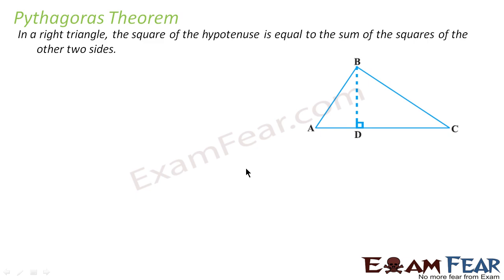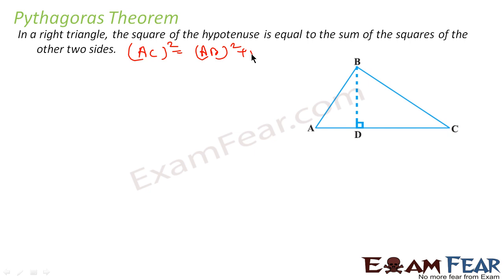Now we'll discuss Pythagoras theorem. Pythagoras theorem says that in a right triangle, the square of the hypotenuse is equal to the sum of the squares of the other two sides. In a right triangle, we know that the longest side is called the hypotenuse. So, hypotenuse squared — that is AC squared — will be equal to the sum of the squares of the other two sides, that is AB squared plus BC squared. We have to prove this theorem, which is called the Pythagoras theorem.